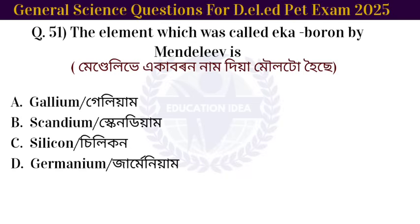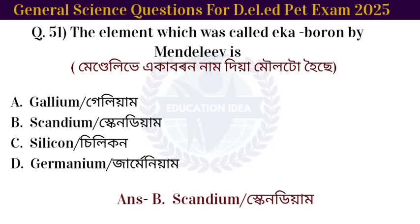Next question: the element predicted by Mendeleev but discovered later — Mendeleev predicted and named it eka-boron, which was later discovered as scandium.